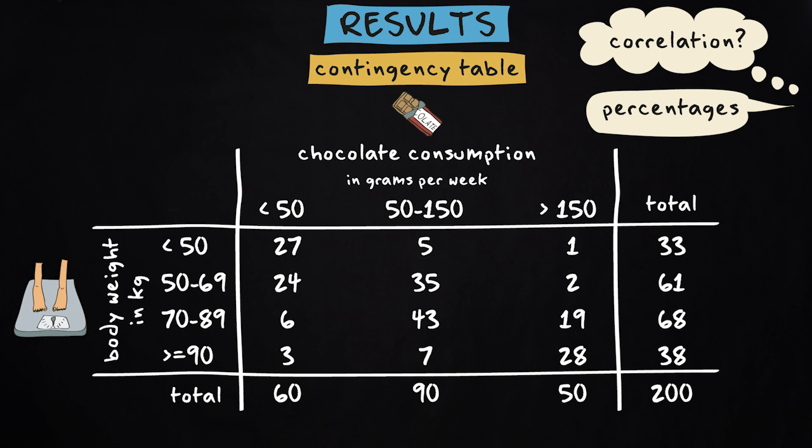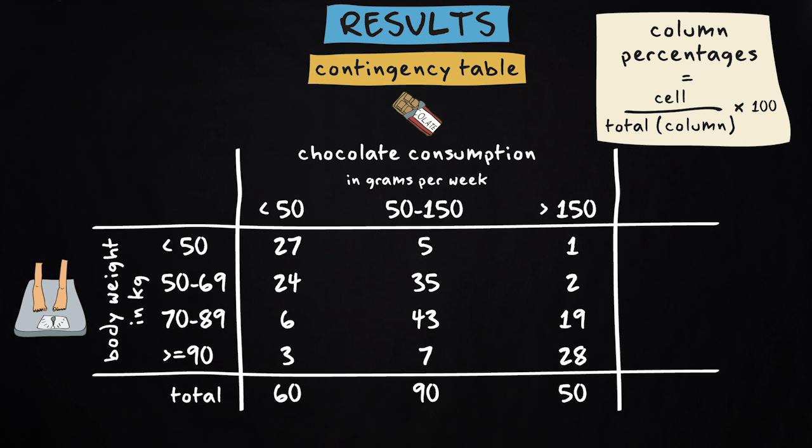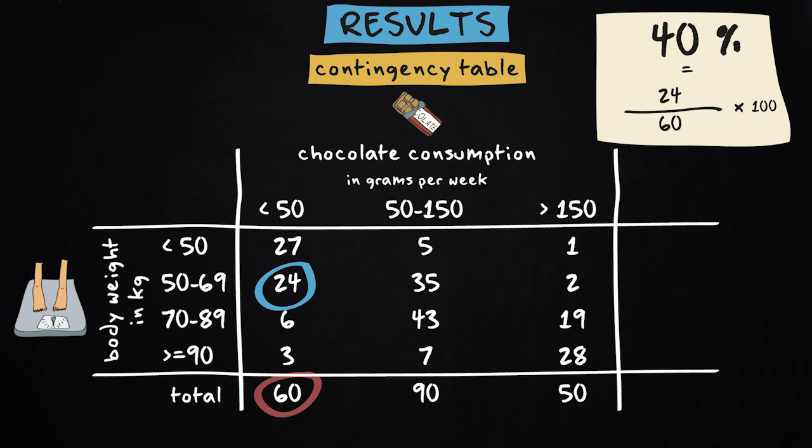And in this case, we compute column percentages. This means that for every cell, we compute a percentage of cases in that cell, compared to the total number of cases in the corresponding column. So, for instance, in this cell we have 24 cases. The total number of cases in the column is 60. So the percentage is 24 divided by 60 times 100. That equals 40%. When we do that for every cell, this is the result.